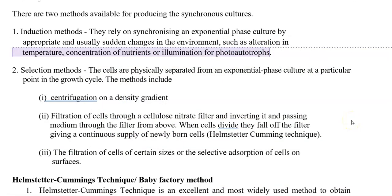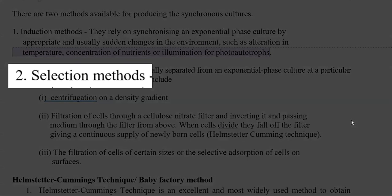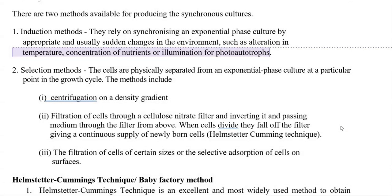In general, two methods are available for producing synchronous culture: induction methods and selection methods. In the induction method, synchronization is possible in the exponential phase of bacterial growth. It is accomplished usually by sudden changes in the environment, especially changes in temperature, concentration of nutrients, or illumination for phototrophs. For example, illumination makes phototrophic organisms grow synchronously compared to other groups of organisms.